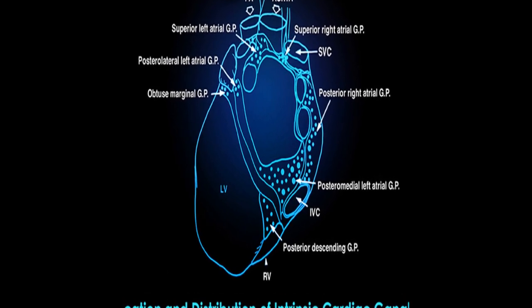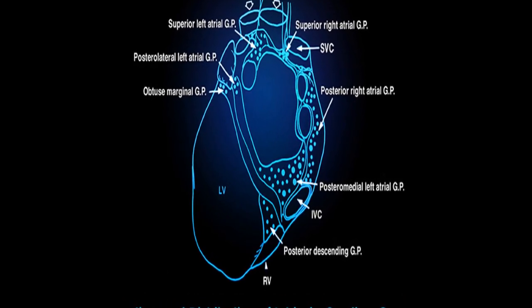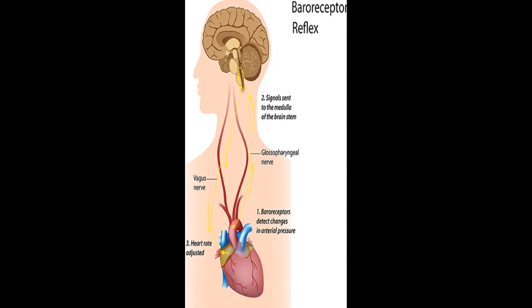This article provides an overview of neural regulation of the heart, including its basic anatomy and physiology.